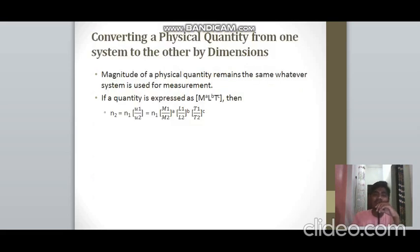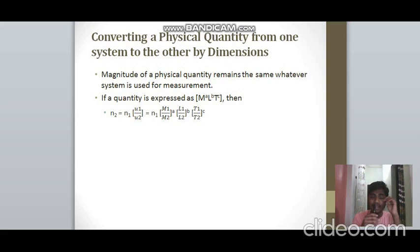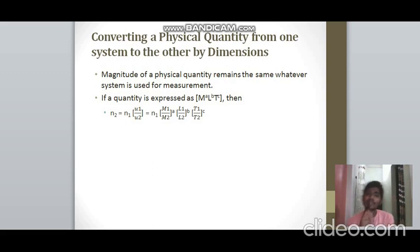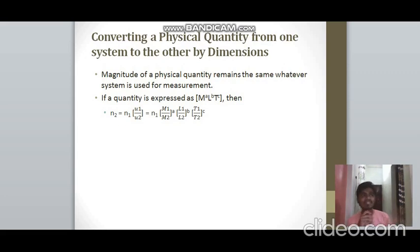To convert a physical quantity between unit systems using dimensional analysis: if a quantity has dimensions M^A L^B T^C, then N₂ = N₁ × (M₁/M₂)^A × (L₁/L₂)^B × (T₁/T₂)^C. This allows conversion, for example, from SI to CGS or MKS.